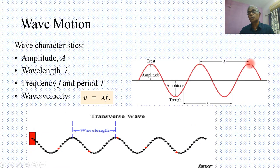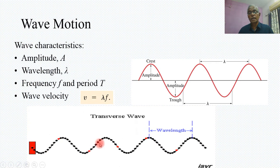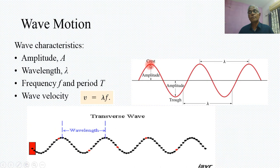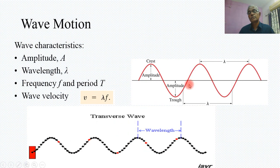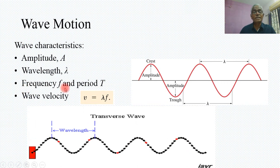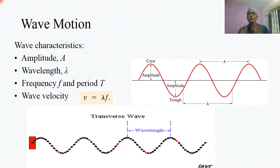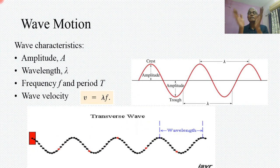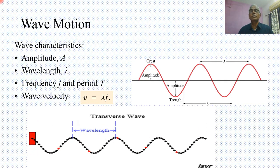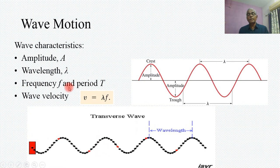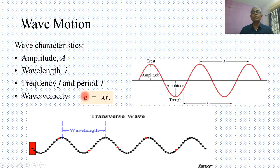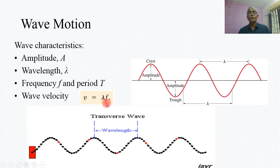The distance between any two consecutive points is called the wavelength, denoted by lambda. From the crest or any two corresponding points, you get a wavelength. Frequency is the number of oscillations per unit time — the unit time may be one second, a minute, or an hour. Frequency and time period are inversely proportional. From these, we can find out the velocity, which is the product of wavelength and frequency.